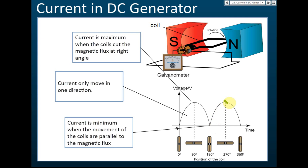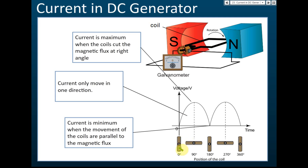Now let's look at the output. The voltage increases then decreases, increases then decreases, but always in the same direction — always positive. For direct current, it always moves in one direction. The current is maximum and minimum depending on the position of the coil relative to a horizontal magnetic field.